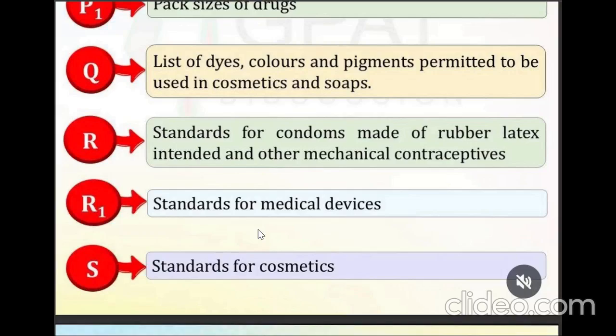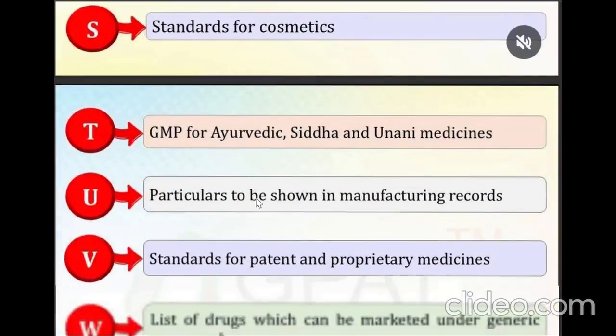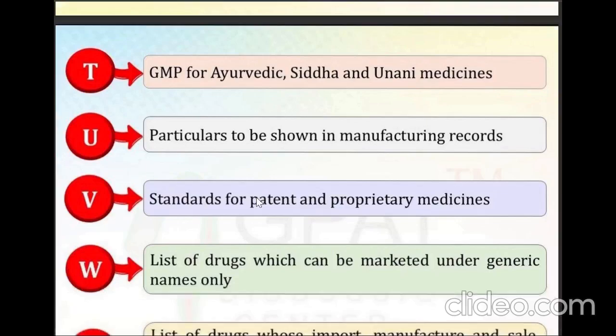Schedule S is for standards for cosmetics. Schedule T covers GMP for the manufacturing of Ayurvedic, Siddha, and Unani systems of medicines. We have also studied Schedule M, which covers GMP for manufacturing of homeopathic medicines and cosmetics.